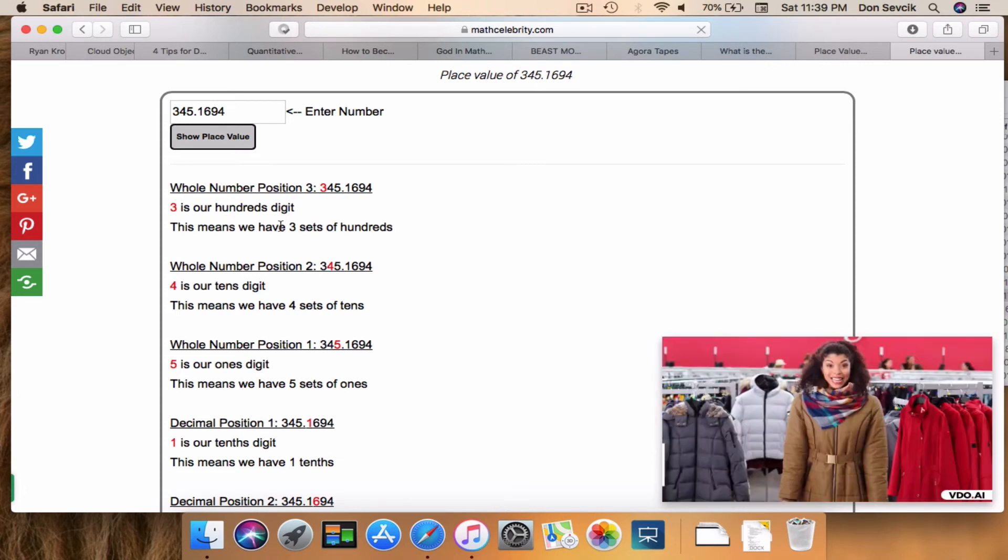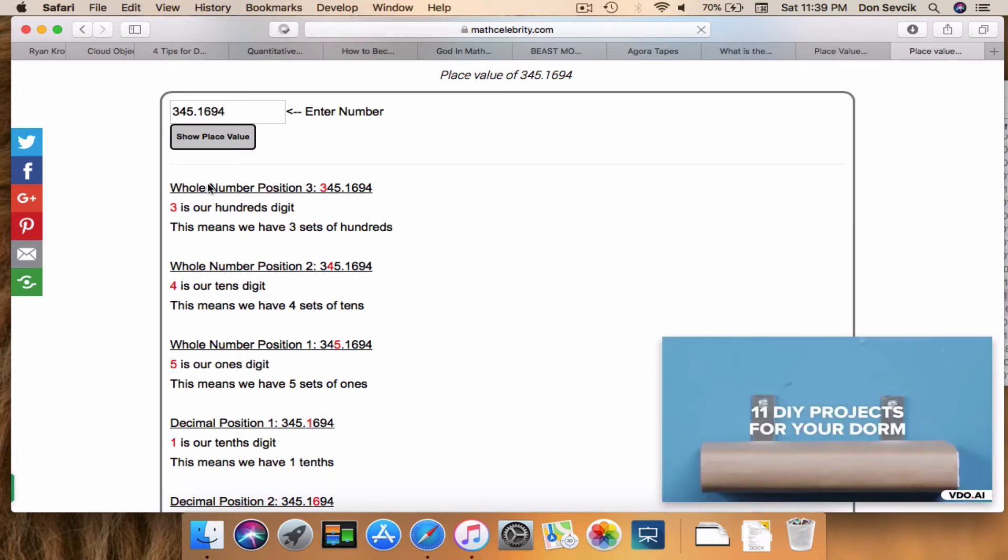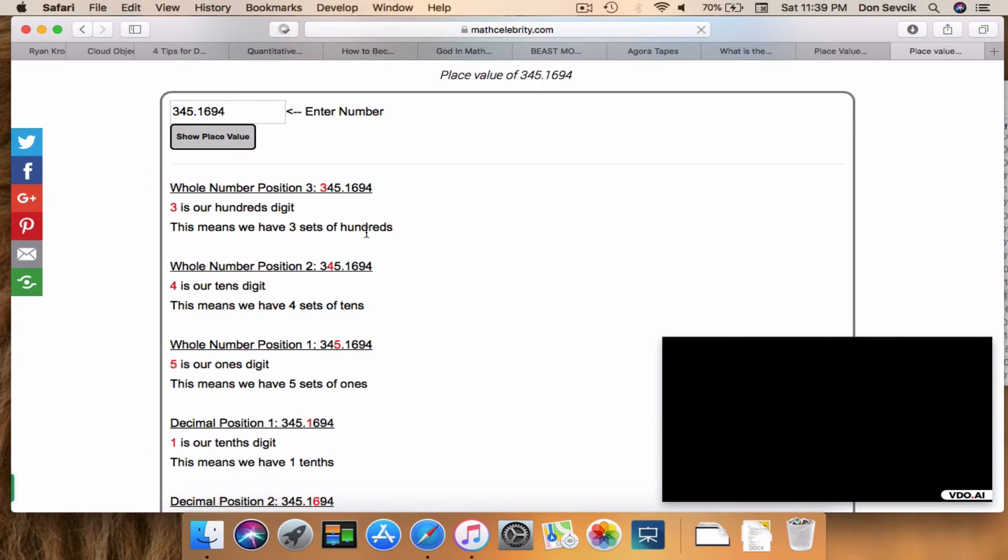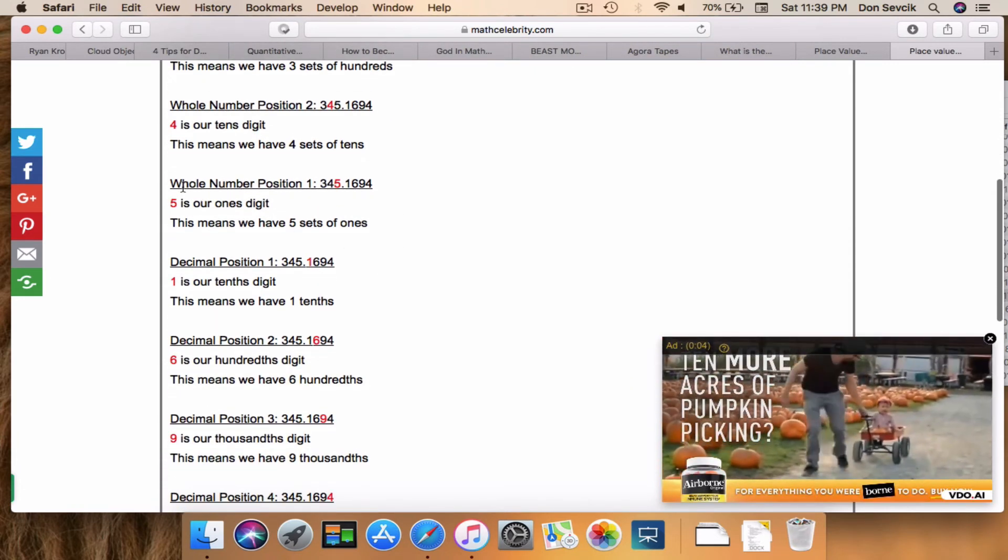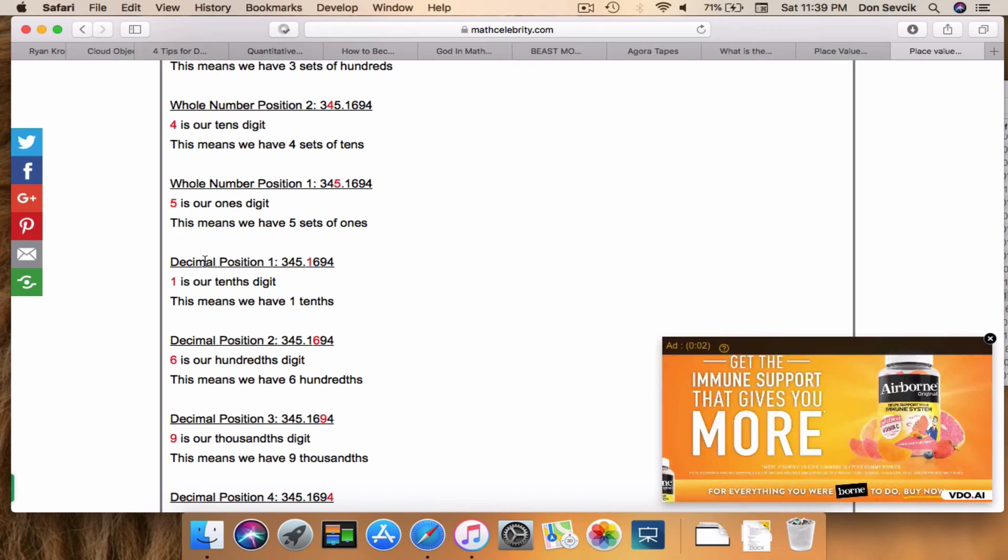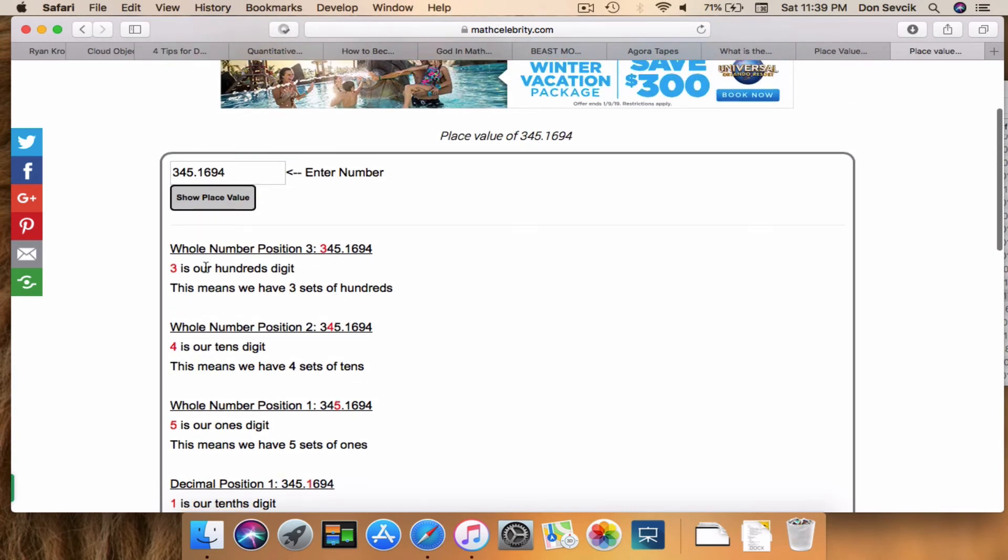So for instance, 3 is our hundreds digit – that means three sets of 100. And it keeps walking through step by step. Once it switches over from whole number to decimal, that means you are now on the right of the decimal point. So 345 is on our left.